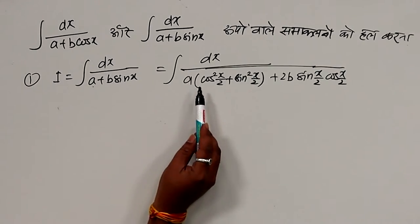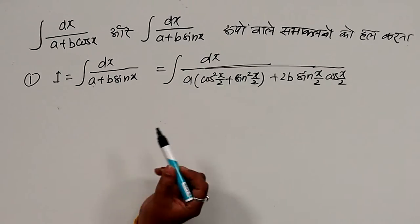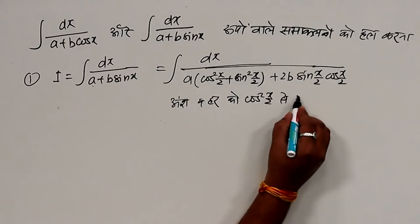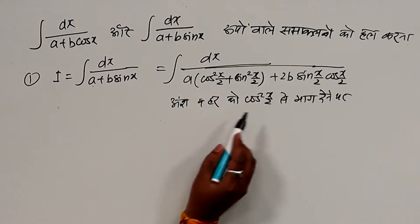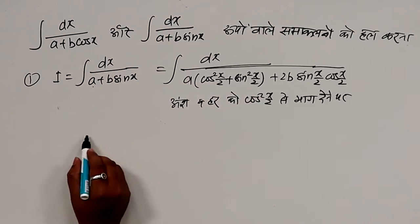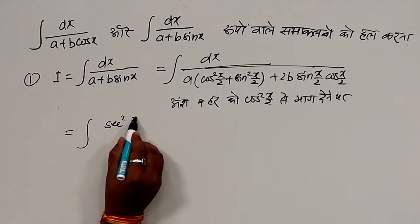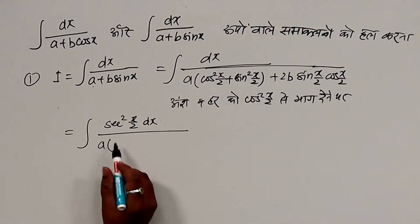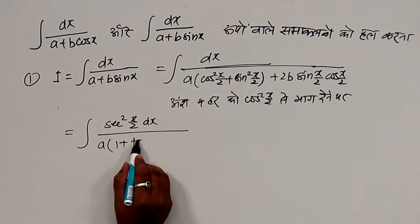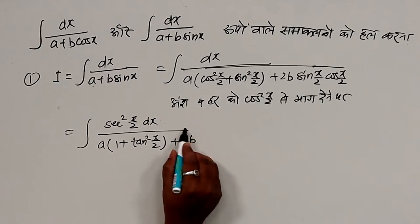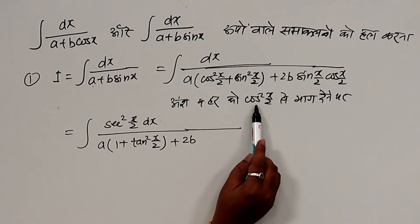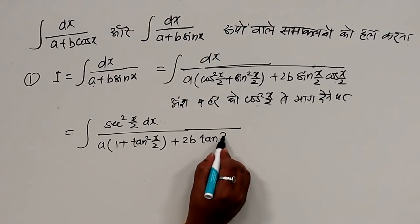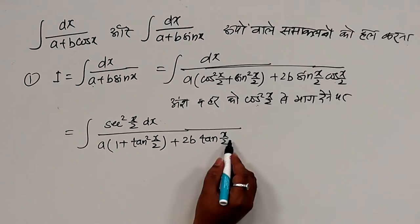इसे सरल करने के लिए अंश और हर को cos²(x/2) से भाग देंगे। 1/cos²(x/2) करने पर मिलेगा sec²(x/2)। तो i = ∫ sec²(x/2) dx / [a·(cos²(x/2)/cos²(x/2)) + sin²(x/2)/cos²(x/2)] = ∫ sec²(x/2) dx / (a + tan²(x/2) + 2b·tan(x/2))। हर में cos(x/2) cancel होकर tan(x/2) मिल जाएगा।